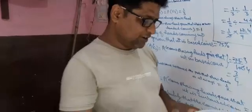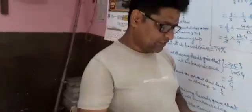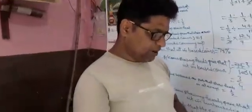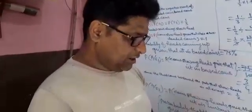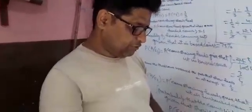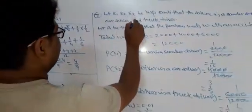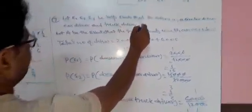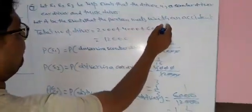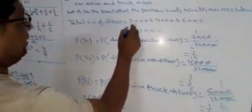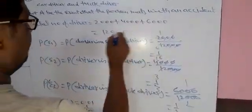Restating: the insurance company insured 2,000 scooter drivers, 4,000 car drivers, and 6,000 truck drivers. The probability of an accident is 0.01, 0.03, and 0.15. Let A be the event that a person meets with an accident. Total number of drivers: 2,000 + 4,000 + 6,000 = 12,000.